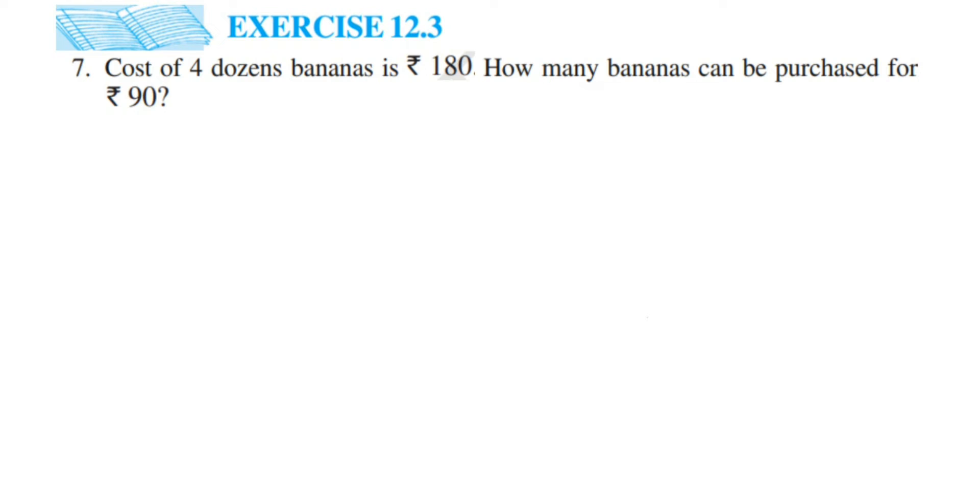We have given cost for four dozen bananas. How many are there in one dozen? In one dozen there will be 12 items. So if there are four dozen, it will be 12 into 4. Let's write down what we know from the question. Given: cost of four dozen bananas equals rupees 180.